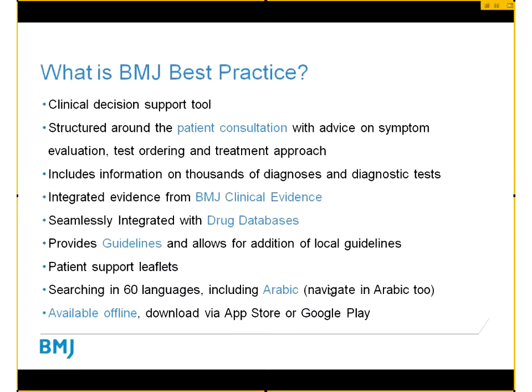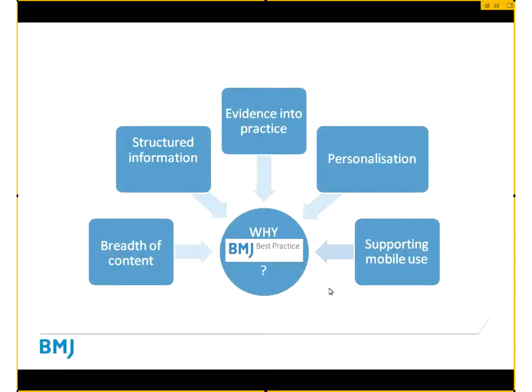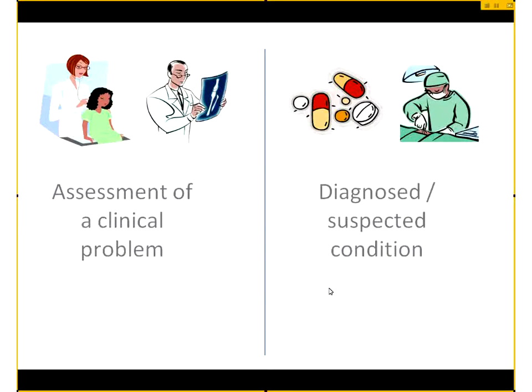To summarise why people use BMJ Best Practice: they use it because of the breadth of content, and because of the way the information is structured — it's concise yet expandable. It has rapid access formats and a unique step-by-step structure. It helps put evidence into practice, including great evidence quality scores and systematic reviews from Clinical Evidence. It has several personalisation features and it supports mobile use.